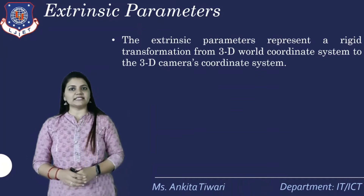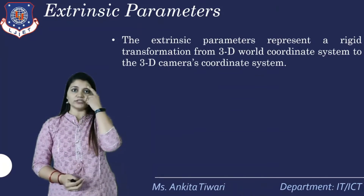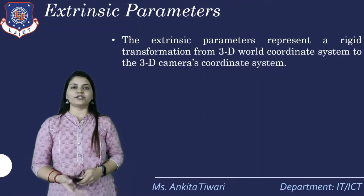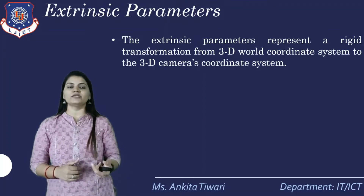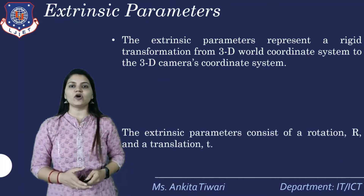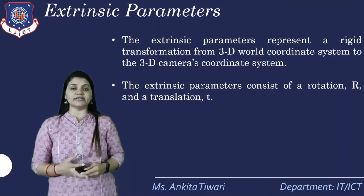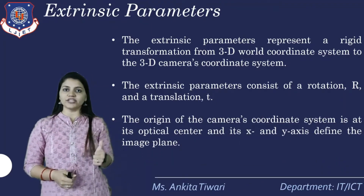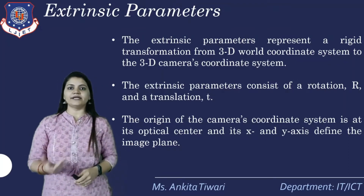Starting with the extrinsic parameters: the extrinsic parameters represent a rigid transformation from a 3D world coordinate system to a 3D camera coordinate system. From the world system, the XYZ parameters will be defined in the 3D camera coordinate system. The extrinsic parameters consist of rotation R and translation T — two transformations defined by these two variables.